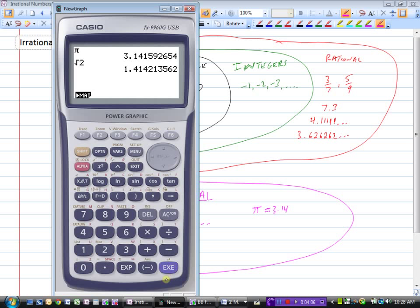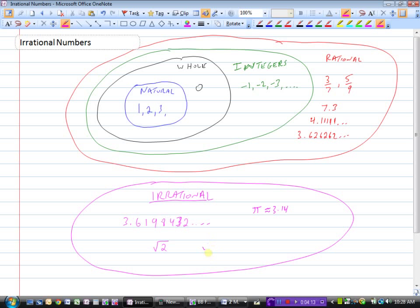It has a decimal that goes on forever and never repeats. So many of our square roots - you could do the square root of 7. You couldn't do the square root of 9 because the square root of 9 is 3, which is a natural number. So not all square roots, but many are irrational numbers.